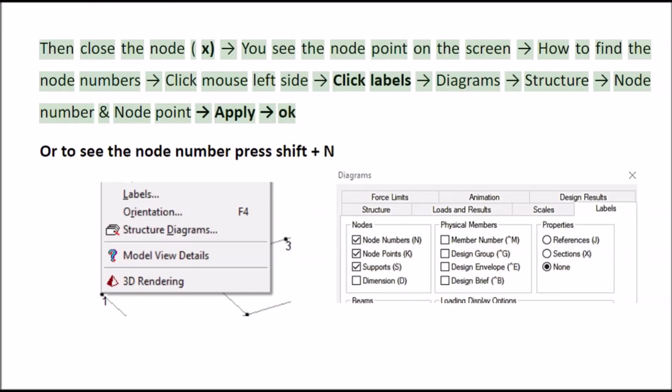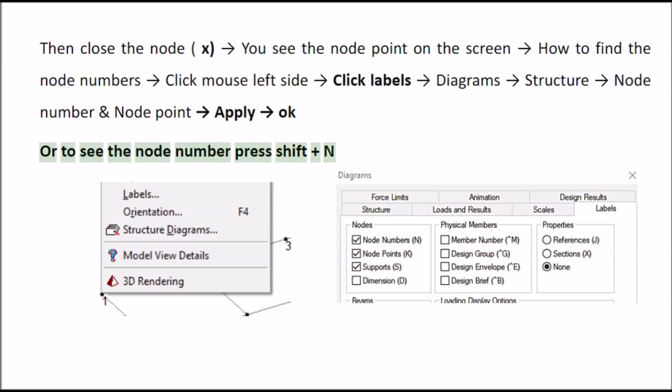Then close the node X. You see the node point on the screen? How to find the node numbers? Click mouse left side. Click labels, diagrams, structure, node number and node point. Apply, OK. Or to see the node number press shift plus N.